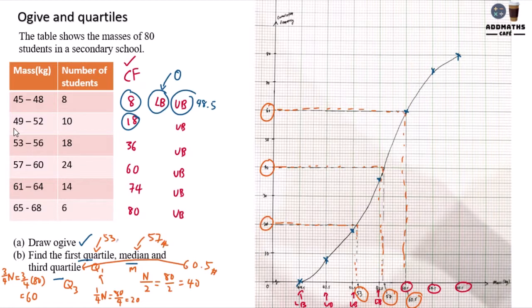From ogive, we can actually find first quartile, third quartile, and the median. So that's all for chapter 7, statistics. Thank you.